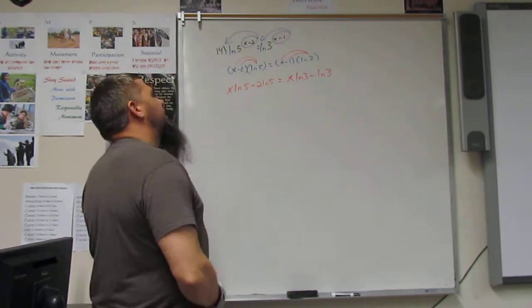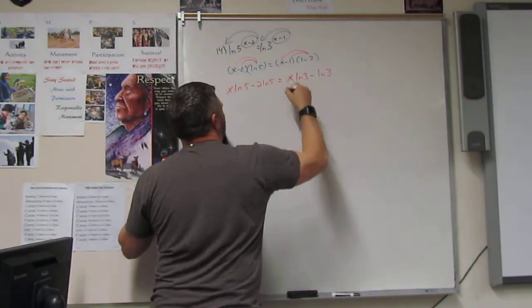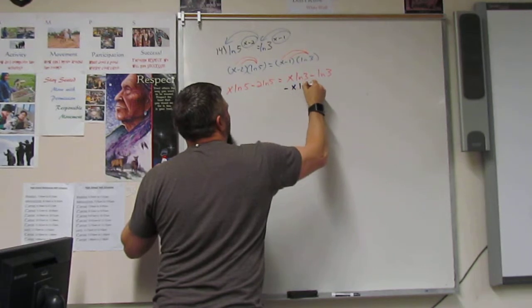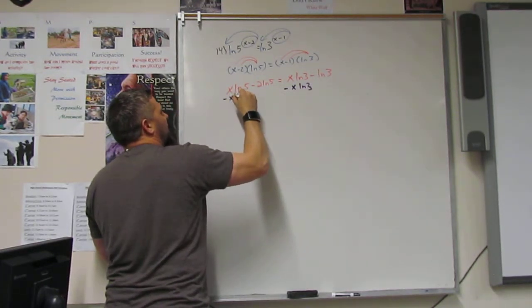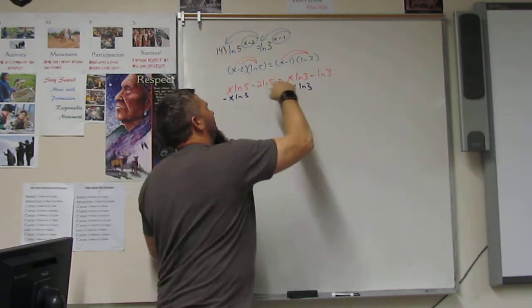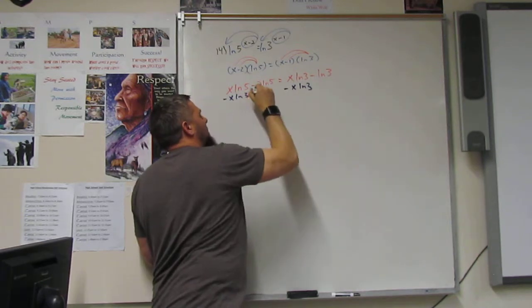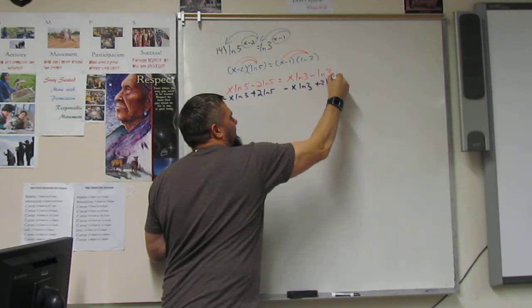The next step, I need to get the x's together. I'm going to move this x minus x ln 3. Since I moved this, I've got to move that over there, plus 2 ln 5.